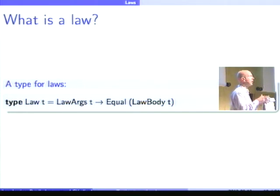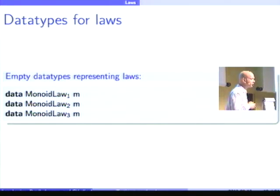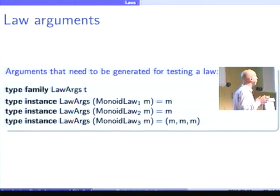As you see here, the LawArgs returns different types for different laws. So, I need, so, LawArgs is a type family, and I need types to express the laws. So, I will introduce these empty data types, MonoidLaw1, MonoidLaw2, and three, to represent the laws and to specify what they do on what kind of arguments they take.